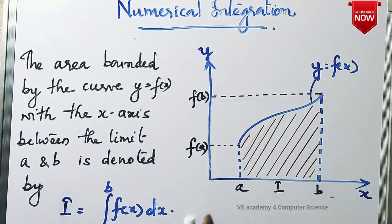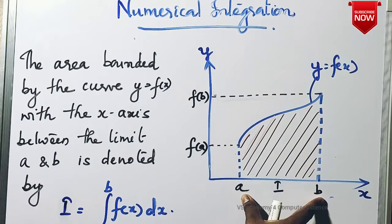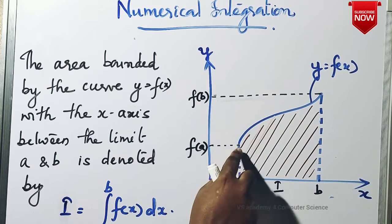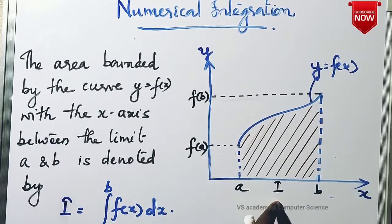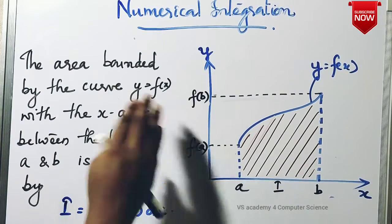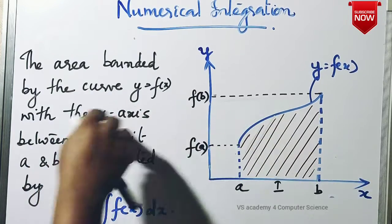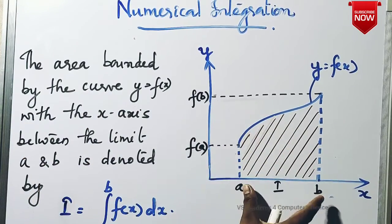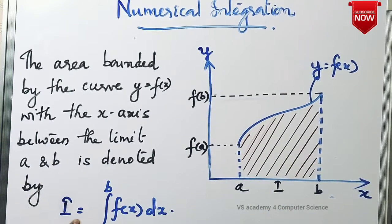I will denote y equal to f of x, which is the equation for that particular curve. The curve is between the interval a and b. The area bounded by the curve y equal to f of x with the x-axis, bounded between the limits a and b, is denoted by I equal to integral from a to b of f of x dx.